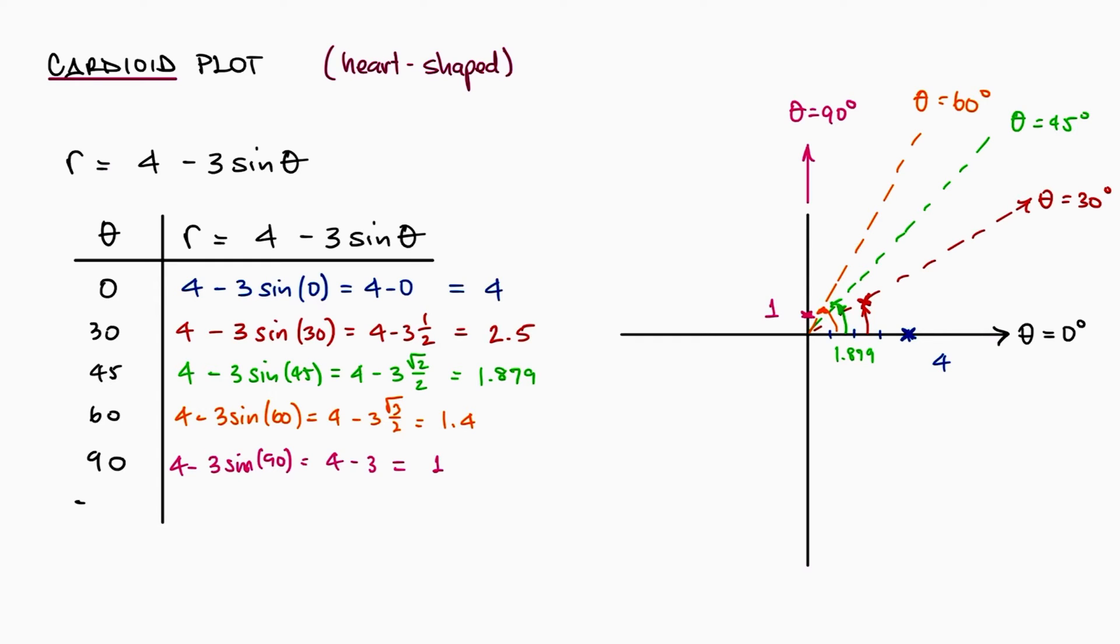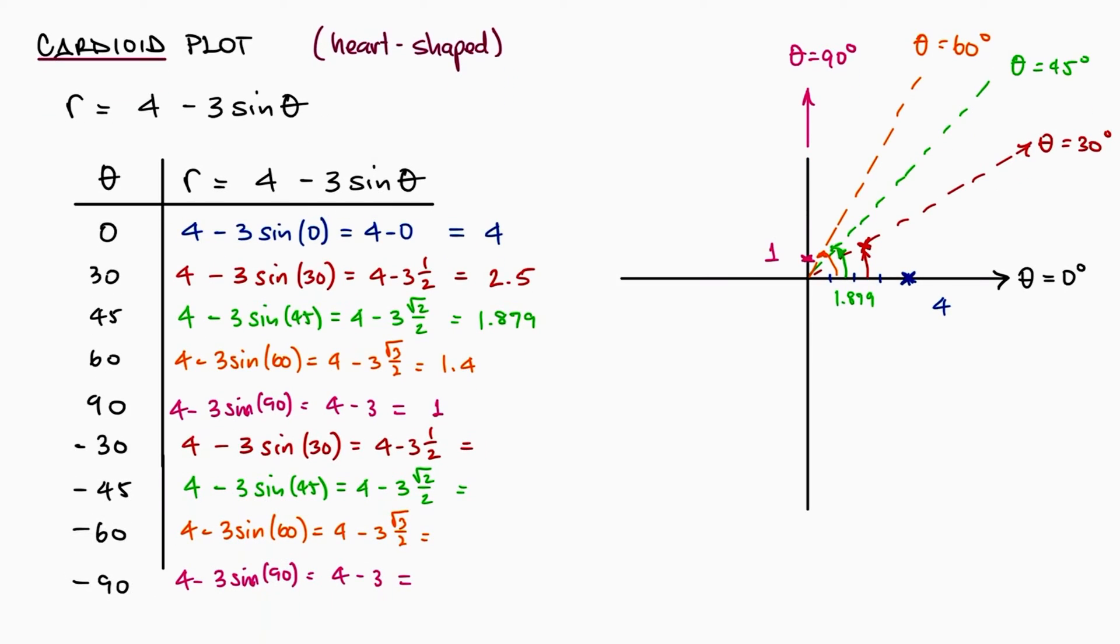When we do this for angles between 0 and minus 90, we're effectively subtracting the negative values of what we just got, and therefore we end up with larger values in the fourth quadrant, that is, the bottom right one. And since the sine function is an odd function, in polar coordinates this means that the plot is symmetric, forming the shape of a heart, ergo the cardioid name for the function.